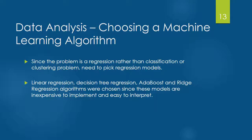Linear regression, decision tree regression with and without AdaBoost, and ridge regression were the machine learning models chosen since they're inexpensive to implement and easy to interpret.